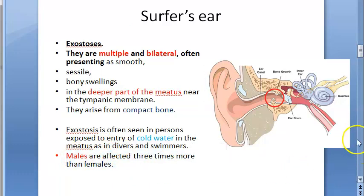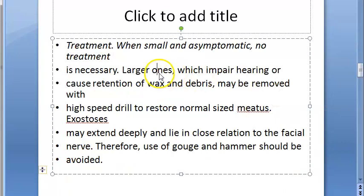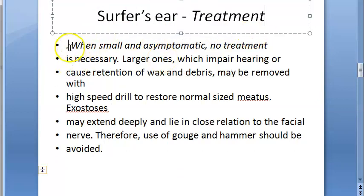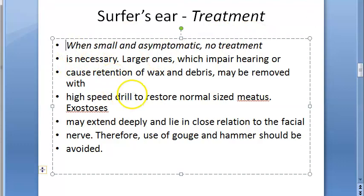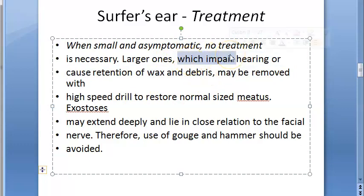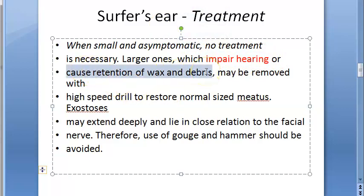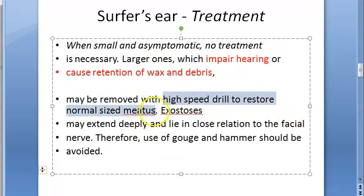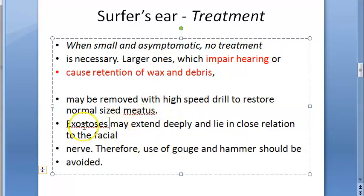Males are affected three times more than females. Regarding treatment: usually they do not need treatment, but if the exostosis gets big, it can block conduction to the tympanic membrane causing impaired hearing. It can also cause retention of wax and other debris since the canal becomes very narrow. Treatment involves using a high speed drill to restore the normal sized meatus.